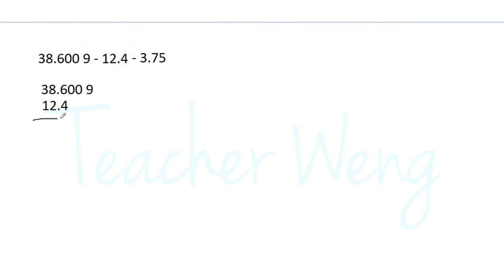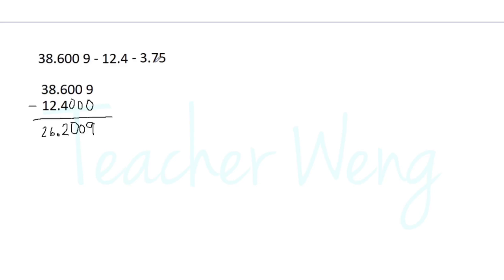If you find this confusing, you may add a zero. So nine minus zero is nine, and zero minus zero is zero. Six minus four, we have two. Write the decimal point here. Eight minus two, we have six, and three minus one, we have two. So we have twenty-six and two thousand nine ten-thousandths.